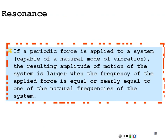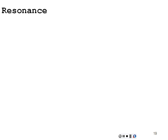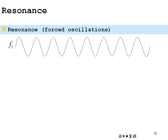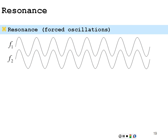A little word about resonance. If you have a periodic force applied to a system that has its own natural mode of vibration, the resulting amplitude of motion is larger when the frequency of the applied force equals or is nearly equal to one of the natural frequencies of that system. In other words, if you force a system at its natural frequency, you can continuously add amplitude and energy to that system with every oscillation.